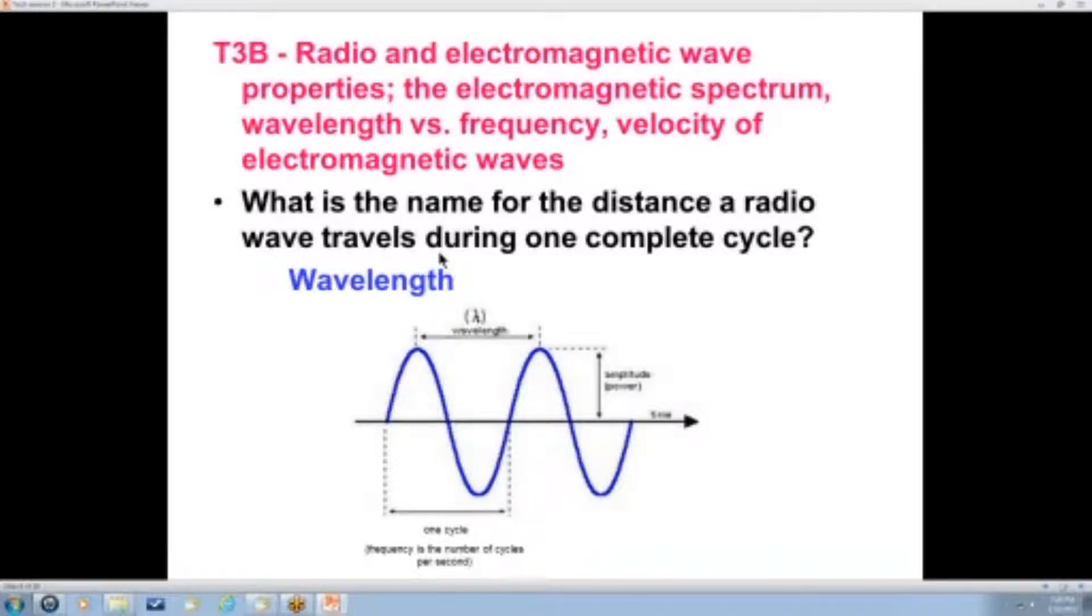This is an important thing when you get to antennas. Because the correct length for an antenna depends on the length of the wave. So when you change frequency, you change wavelength, which means you have to change the antenna length to have a correctly functioning antenna. And we'll get into that more as we go on through the course here. Any questions on this before I move on from it?